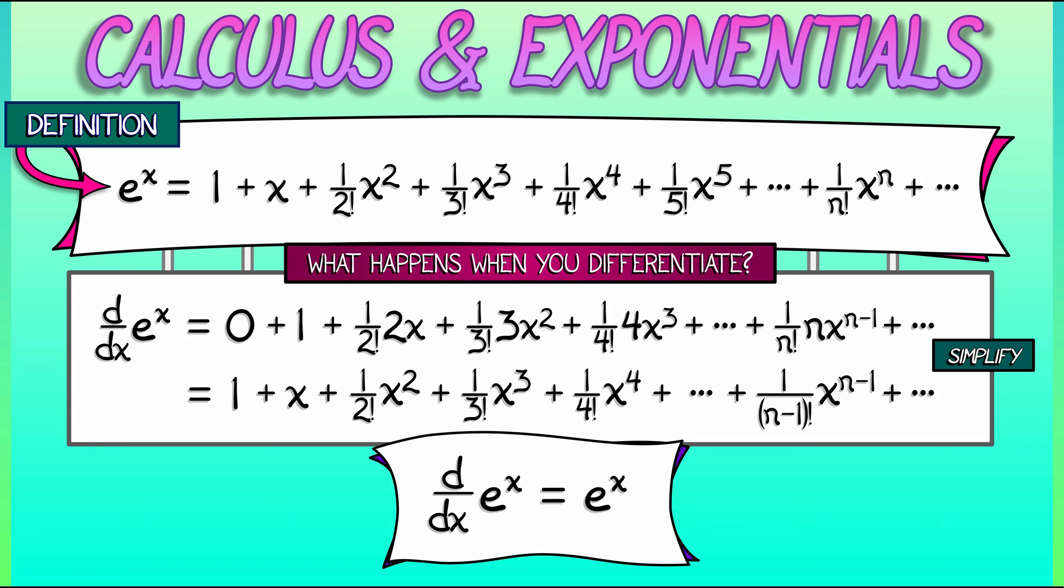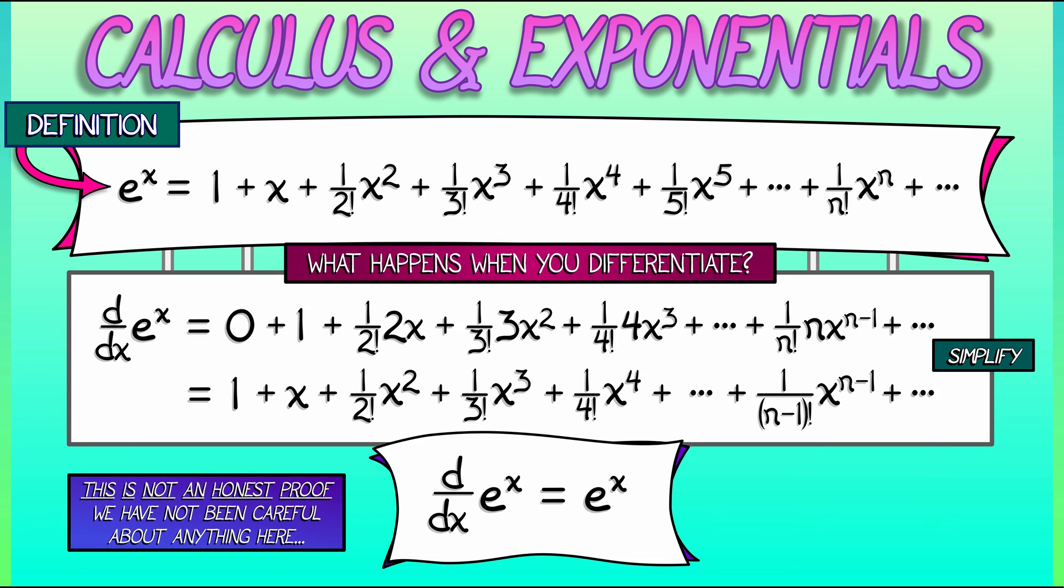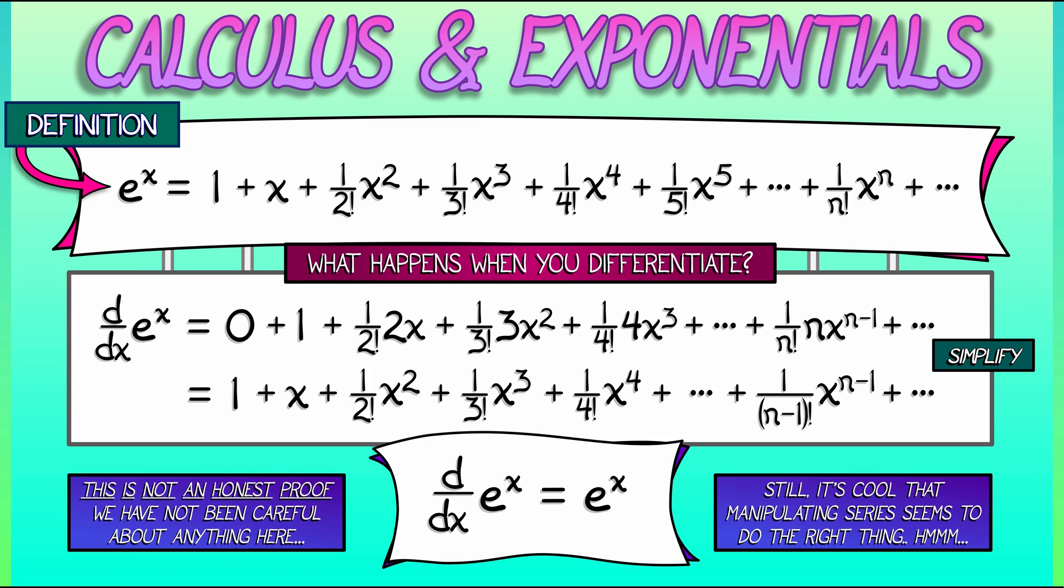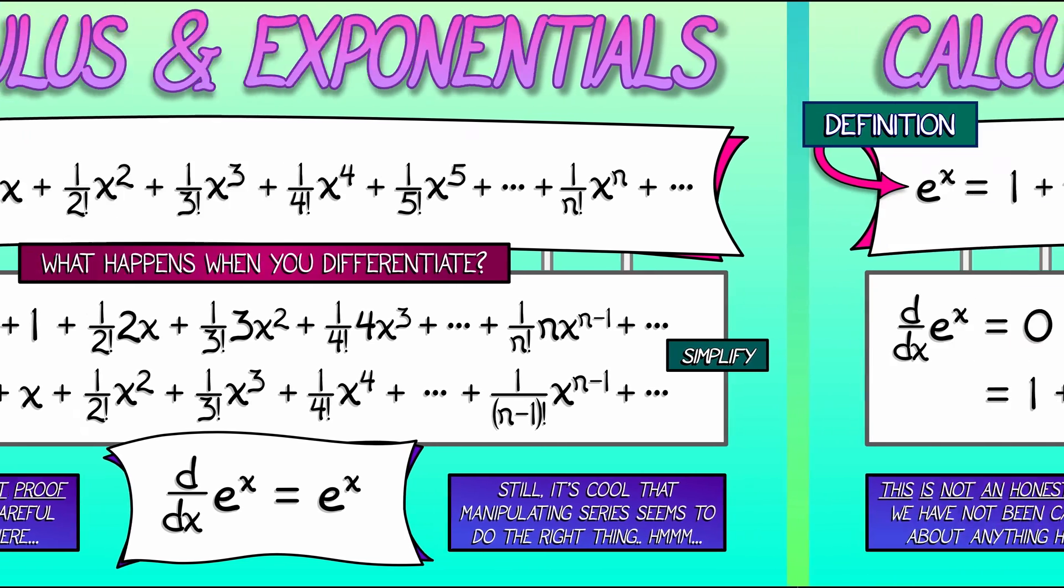Now, this is not an honest proof. This would not pass muster. We have skipped all kinds of subtleties and details here. However, it's still really cool that just manipulating this series as if it were a long polynomial seems to do the right thing. Well, let's keep going. Let's keep thinking.